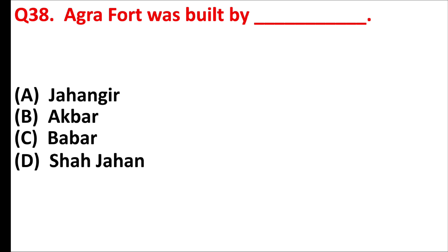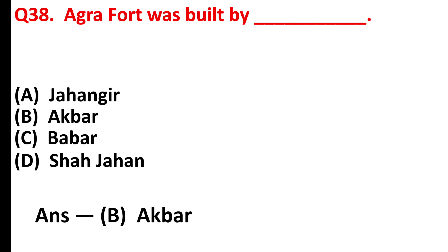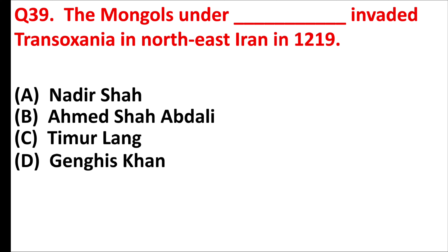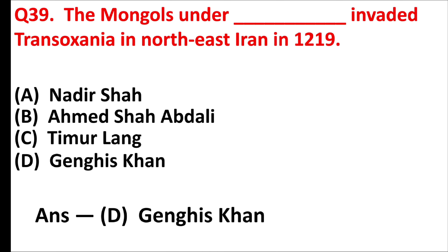Agra Fort was built by — answer is option B: Akbar. The Mongols under whom invaded Transoxiana in north-east Iran in 1219? Answer is option D: Genghis Khan.